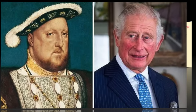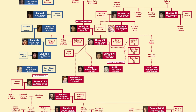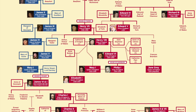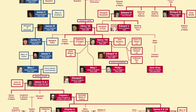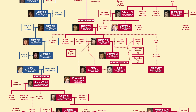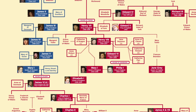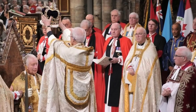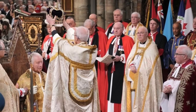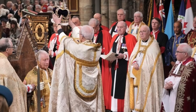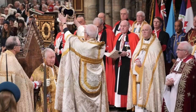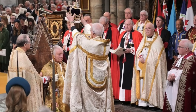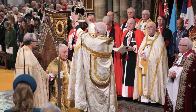En este video intentaré repasar las vidas de miembros de las familias Tudor y Estuardo y trataré de mostrarles cómo ambas casas dieron lugar a los actuales Windsor. El rey Carlos III se desempeña como jefe de la iglesia de Inglaterra, al igual que la difunta reina Isabel II antes que él, y ambos tomaron el título de gobernador supremo, mientras se sentaban al frente de una institución británica de siglos de antigüedad, establecida por la monarquía.